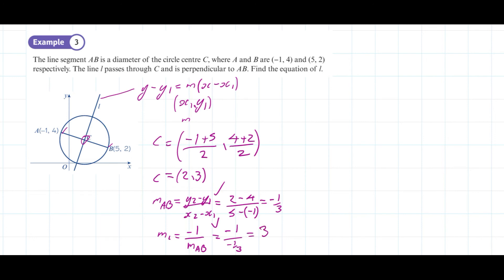So we've now got the gradient of our line L and our point it goes through. So we can use y minus y1 equals m(x - x1). Let's substitute those in. We've got y - 3 equals 3 times (x - 2).